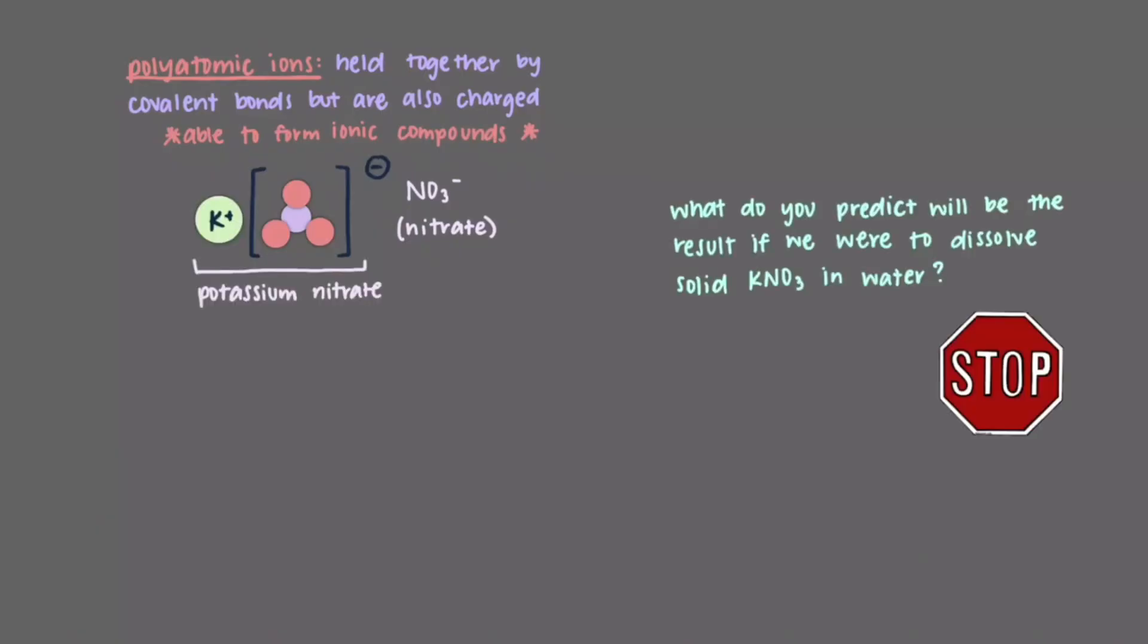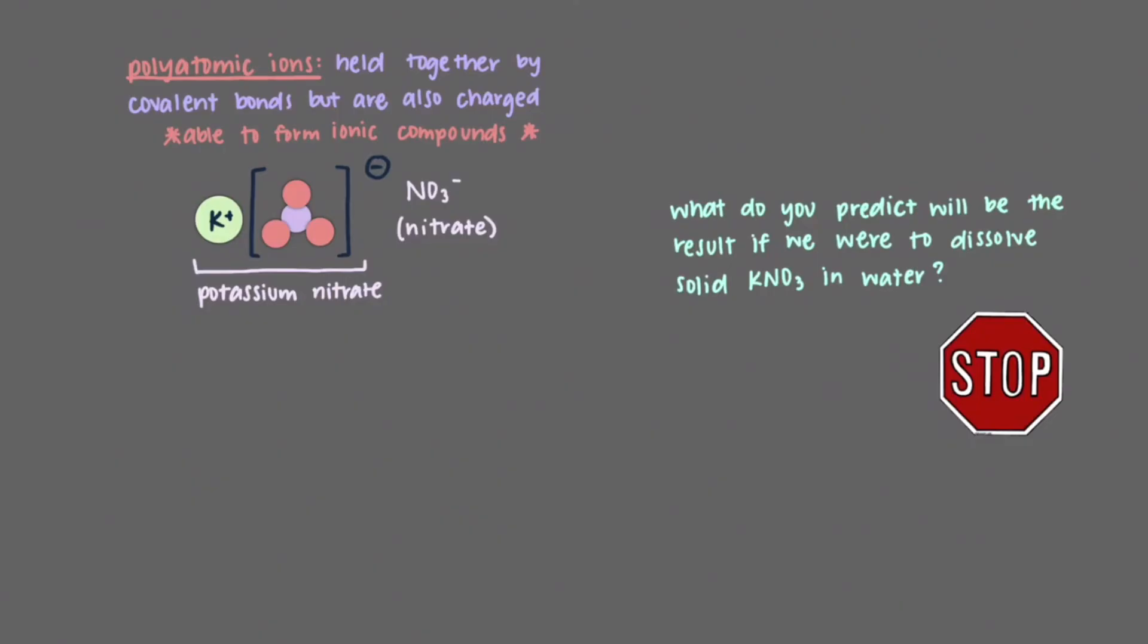Now let's classify one more chemical species involved in reactions. Polyatomic ions, such as NO3- which is also known as nitrate, are held together by covalent bonds but are also charged species. Because they are charged, they are able to interact with ions to form ionic compounds. For example, nitrate can interact with a potassium ion to form potassium nitrate. What do you predict will be the result if we were to dissolve solid potassium nitrate in water?